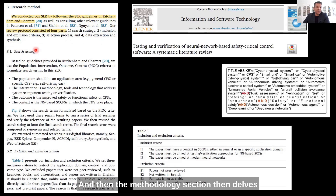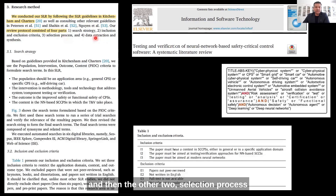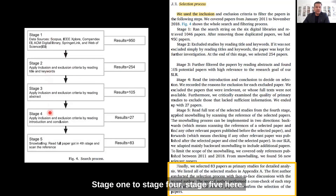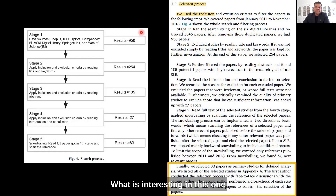The inclusion and exclusion criteria are shown here, search strategies here, and then the other two - selection process and data extraction - are also listed. This is their selection process: how they selected the papers from stage one to stage five. Each and every step shows what they have mentioned and what they suggest as the next step.